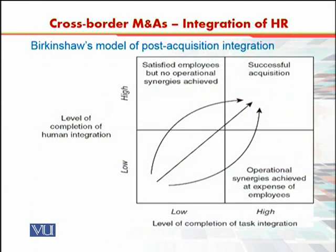There are four different possibilities and combinations in which integration can take place: the level of task integration can be high or low, and the level of human integration can be high or low. It is possible that a firm starts from both low levels, then moves towards high task integration and low human integration, and still achieves successful acquisition. Or it could move towards high human integration but low task integration, and then also achieve successful acquisition.